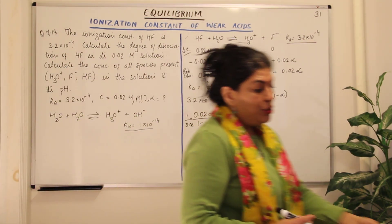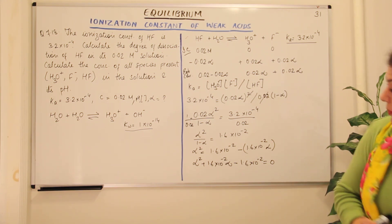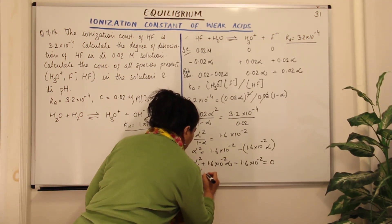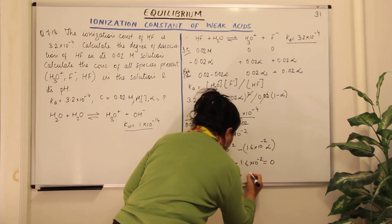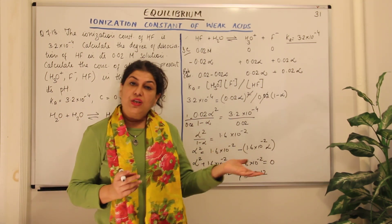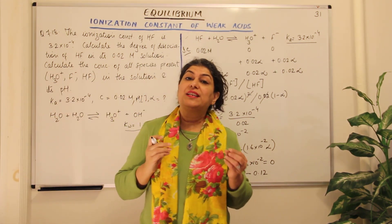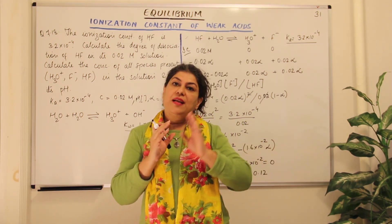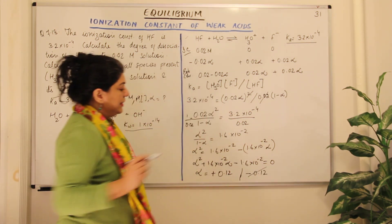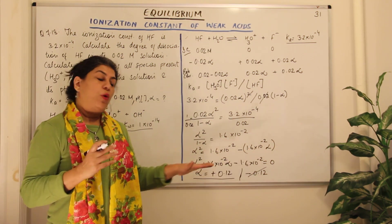Using this quadratic equation, we can solve for alpha. Solving gives two values: α = +0.12 and α = −0.12. Since alpha is the degree of dissociation and represents a concentration quantity, it cannot be negative. Therefore, we reject the negative value and select α = 0.12.